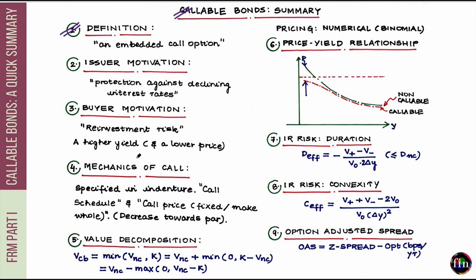Let's begin with the definition first. Think of a callable bond as one which has an embedded call option in it. This call option is a short call option, as will be clear as we move forward. This call option lies with the issuer. If the issuer were to choose to exercise this call option, it means the issuer can early redeem the bond prior to its stated maturity date at a pre-specified price, which we refer to as the call price. Simply put, a callable bond is one which may not survive till its stated maturity date. At the choice or discretion of the issuer, the bond may be early redeemed prior to its maturity date at a pre-specified call price.